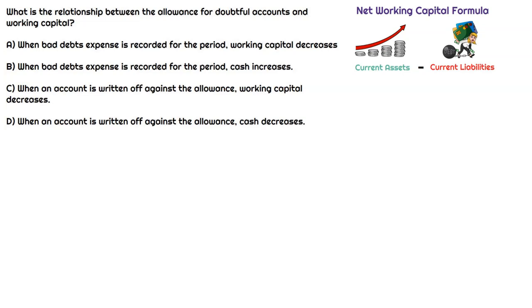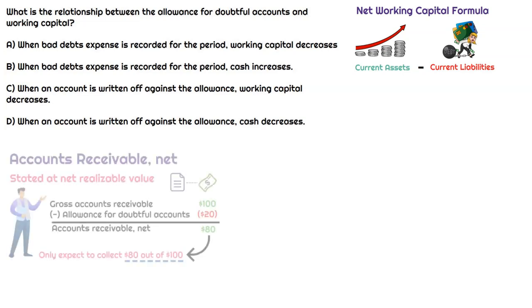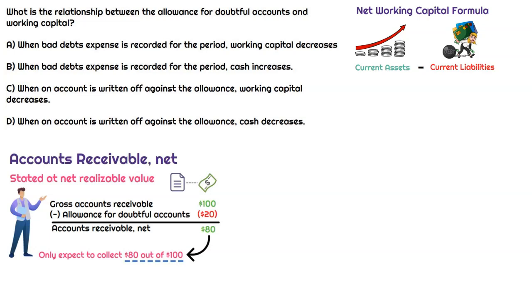Where is Allowance for Doubtful Accounts located on the balance sheet? It's going to be part of current assets, and specifically, it's going to be a contra asset under accounts receivable. As you can see in the visual, the Allowance for Doubtful Accounts balance allows us to state accounts receivable at net realizable value.